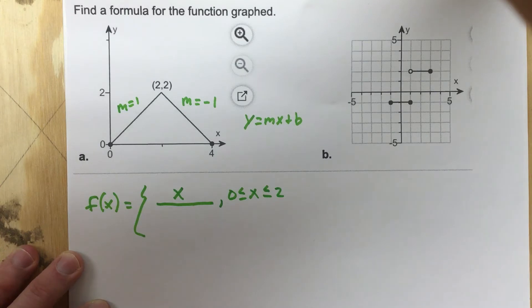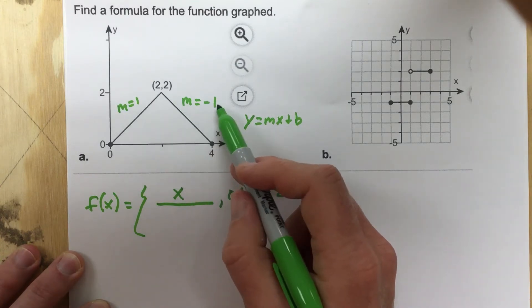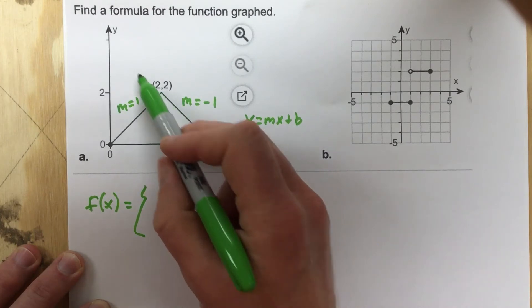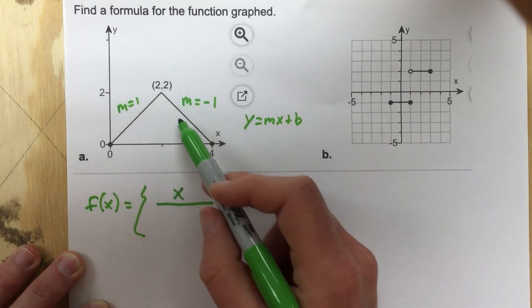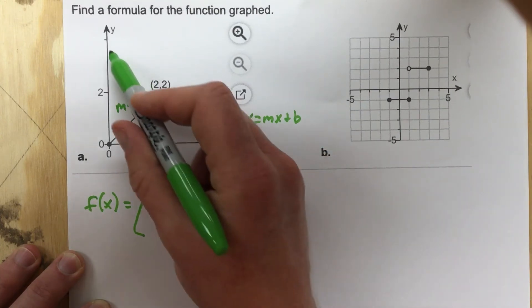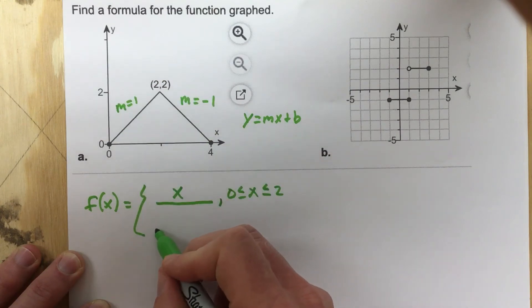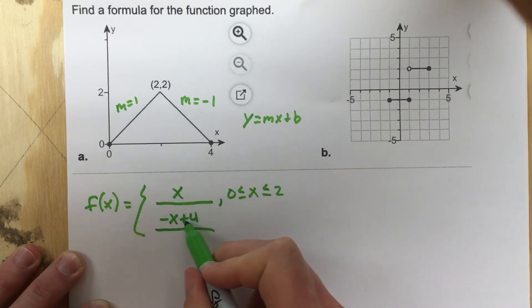Now the second part, I'm going to use the function negative x, but it's negative x, and it's going to cross, if you notice that line, it would go all the way up to 4. So this is actually y equals negative x plus 4. So this is going to be negative x plus 4 for the function. Remember, this is y equals negative x plus 4.